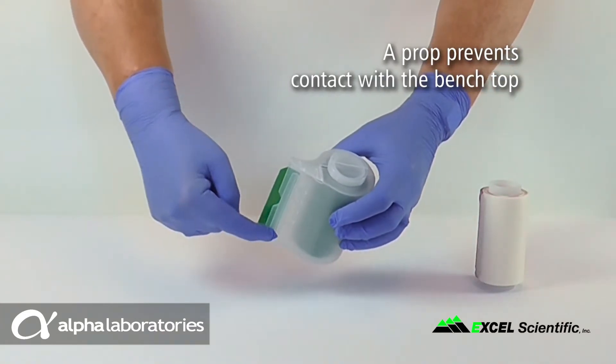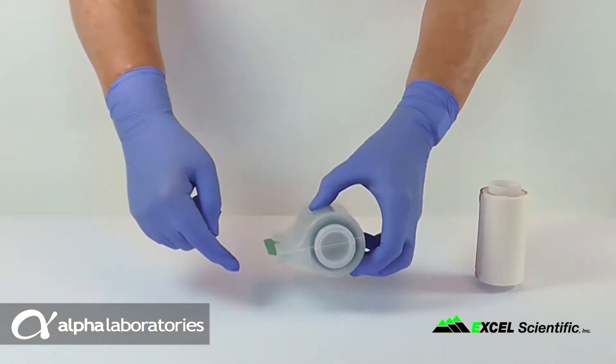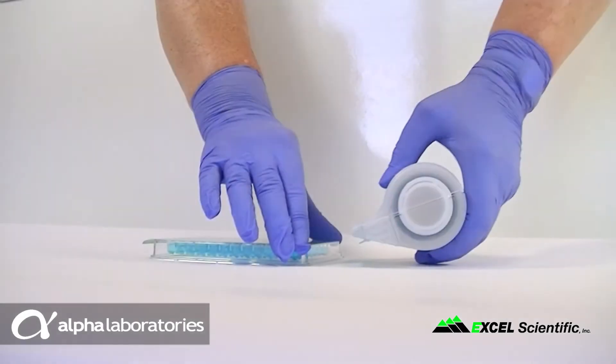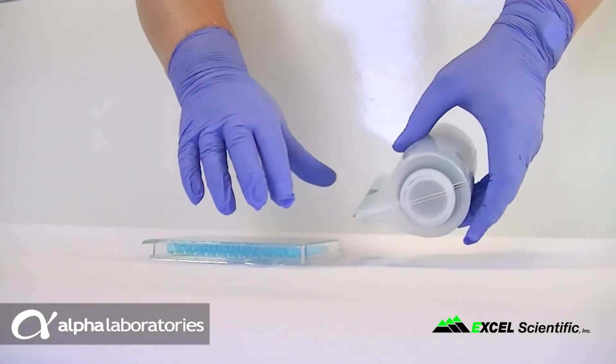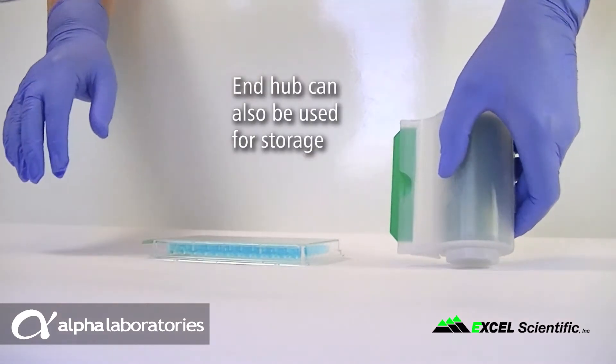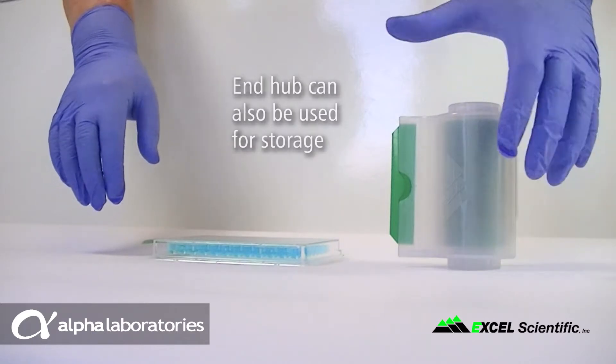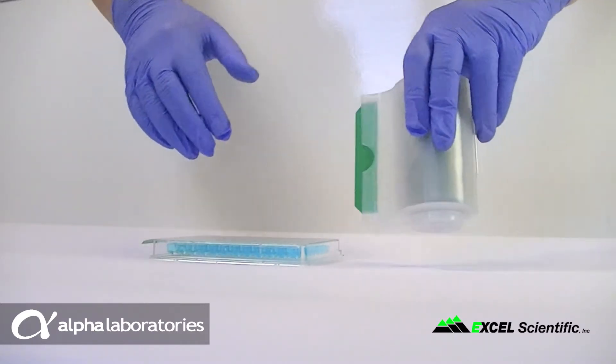A prop on the lower surface prevents the bill from contacting the benchtop when the dispenser is not in use. Alternatively, the dispenser can stand on one of the hubs at the roll ends during storage. The dispenser thus parked provides protection and keeps unused films handy for sealing subsequent plates.